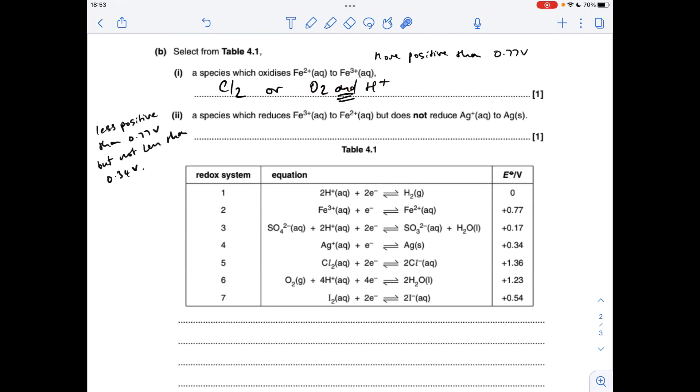For the other part of this question, we need something that's less positive than 0.77 volts, because we want the iron half equation to run left to right, but we don't want the silver one to go left to right, so it needs to be in between these two values. You can see it's this one here.